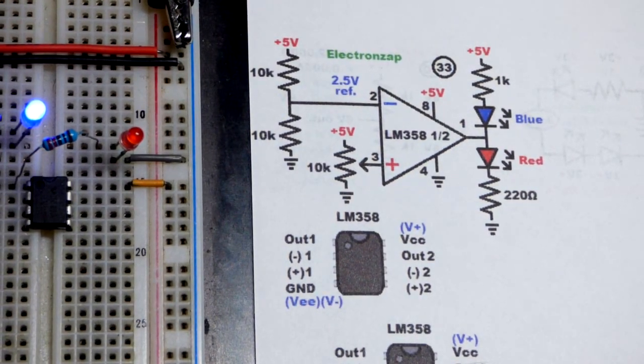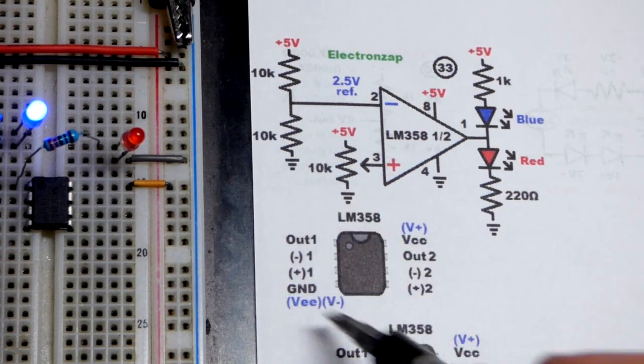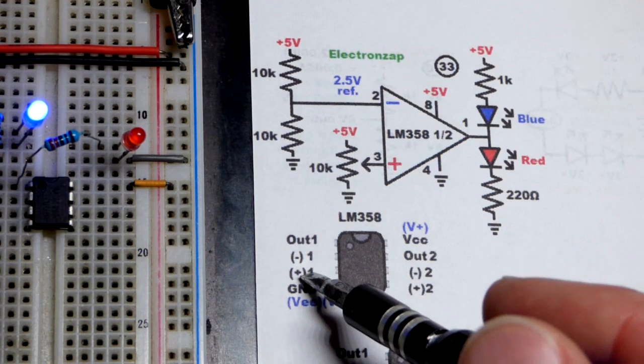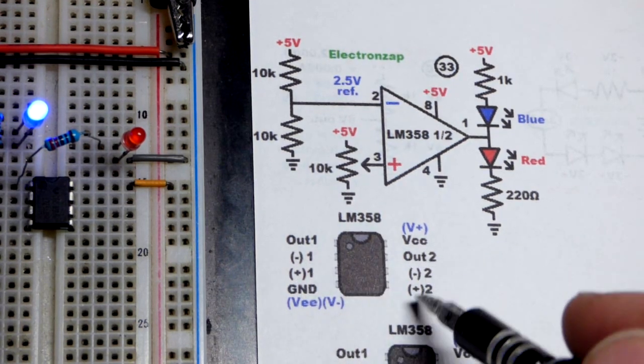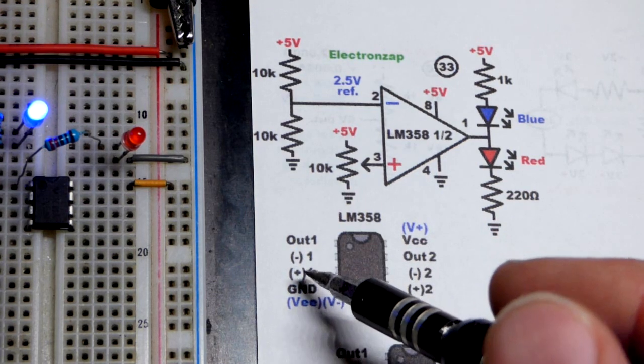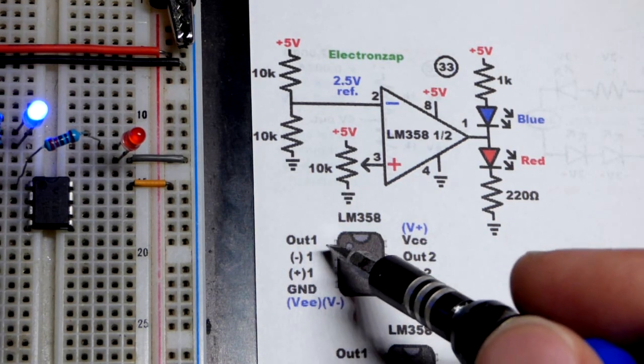So now we'll look at this closer. Here is the pin layout for the op-amp on the board there. You have to power it, positive supply, negative supply. There's an op-amp on one side, and then another op-amp on the other side, which we are not using at all. We're only using number 1 right there. So there's the pin layout.